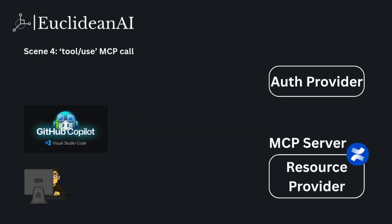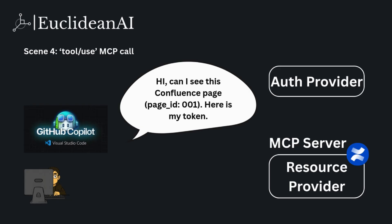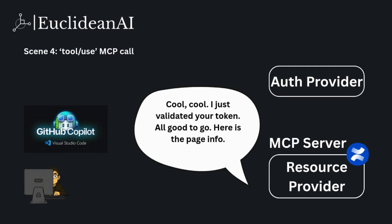In scene four, once the MCP client receives the access token, it talks to the MCP server again, this time saying: can I see this Confluence page with page ID 001? Here is my token. The MCP server validates the token and replies: all good to go, here is the page info. That's the full authentication workflow. At the end, the MCP client, once authorized, can retrieve the relevant information from the MCP server.